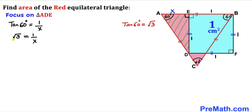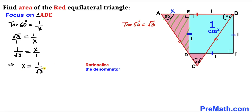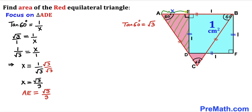Let's make a fraction with √3 over 1 on the left side and flip both sides: 1/√3 = x. Now let's rationalize the denominator by multiplying numerator and denominator by √3. In the denominator, √3 × √3 = 3. So x = √3/3. Therefore the length AE turns out to be √3/3 cm.